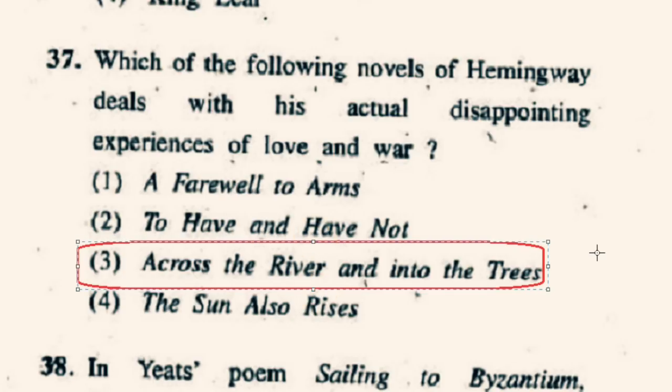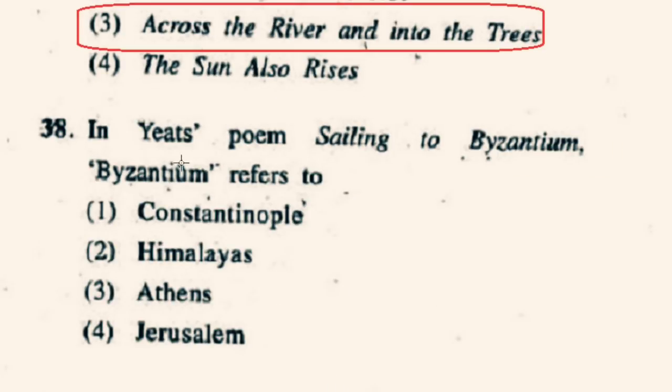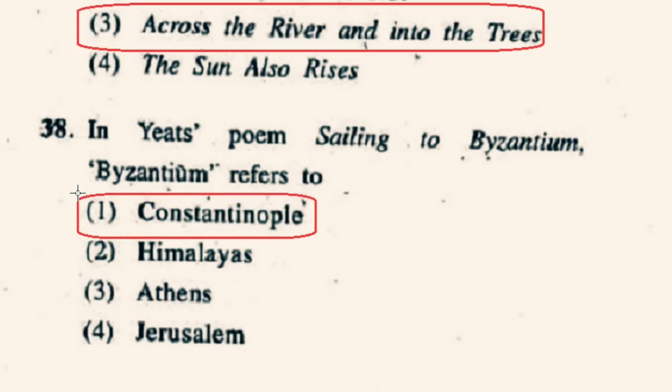Question number 38: In Yeats's poem Sailing to Byzantium, Byzantium refers to what? Sailing to Byzantium is a poem by William Butler Yeats, first published in the 1928 collection The Tower. This poem comprises four stanzas in ottava rima, each of eight ten-syllable lines. It uses a journey to Byzantium — that is Constantinople — as a metaphor for a spiritual journey. So option 1st, Constantinople, will be the correct option.